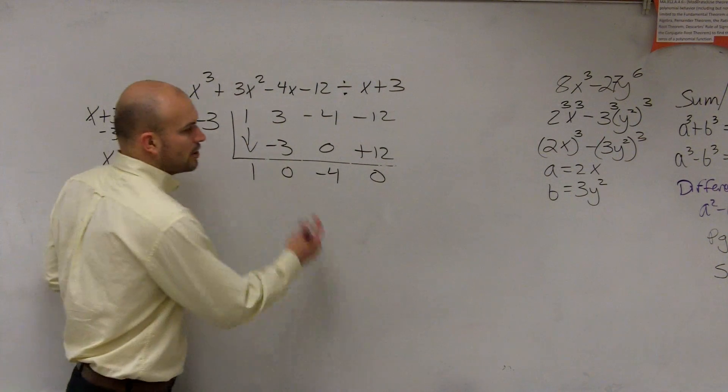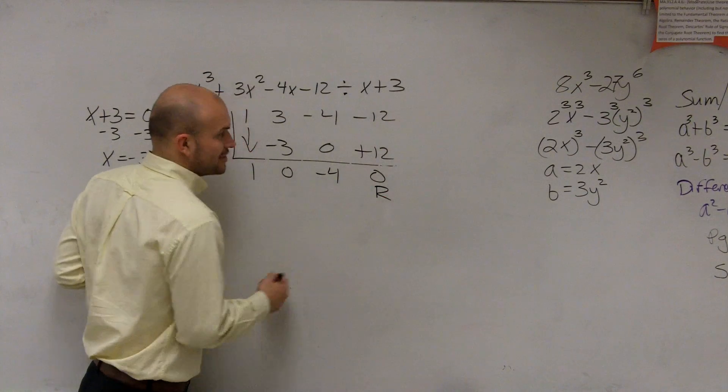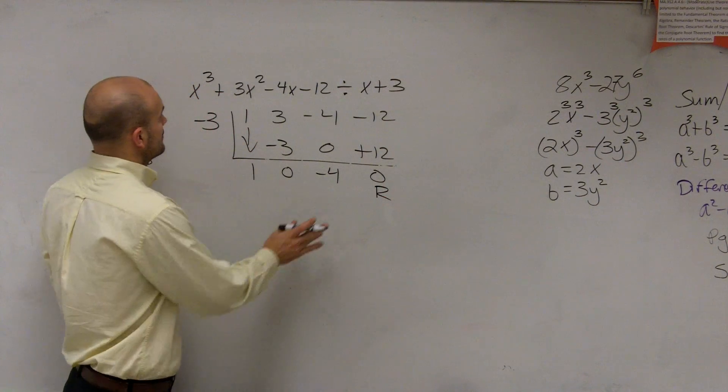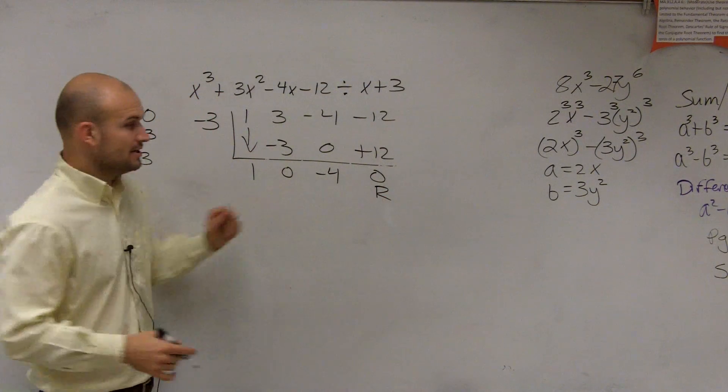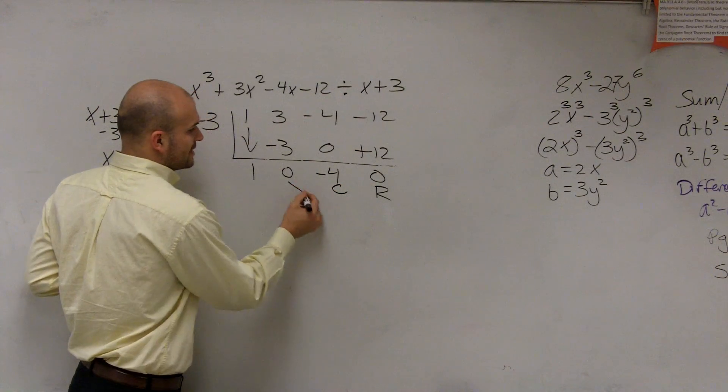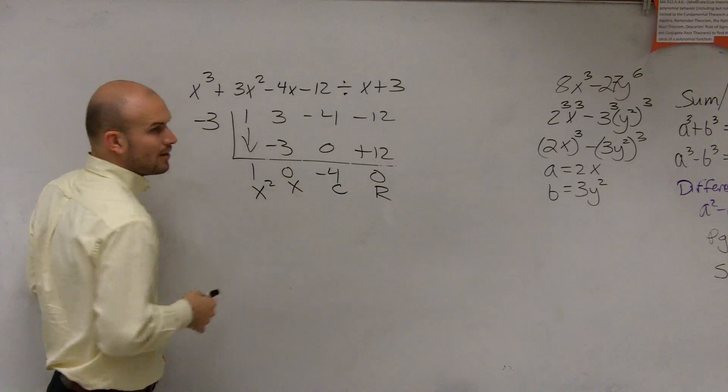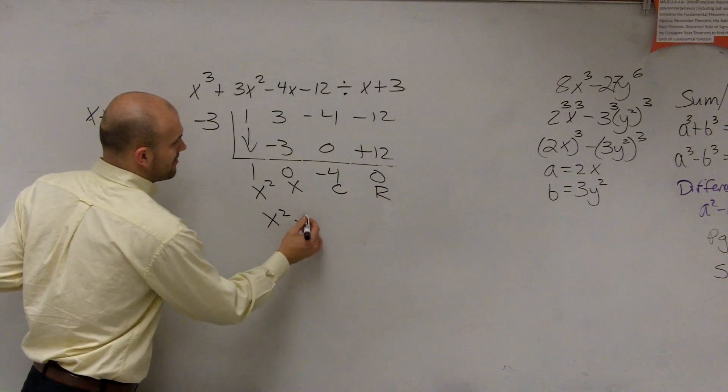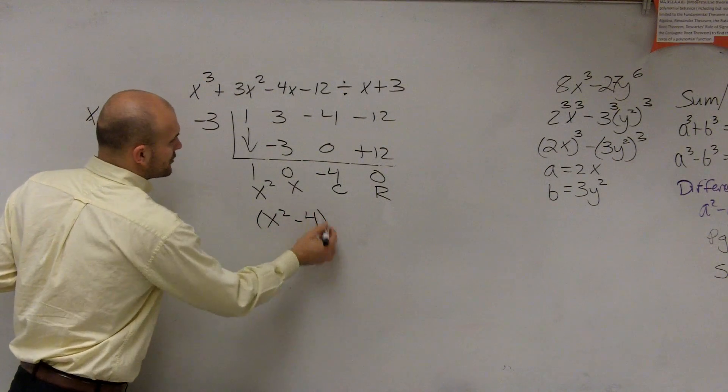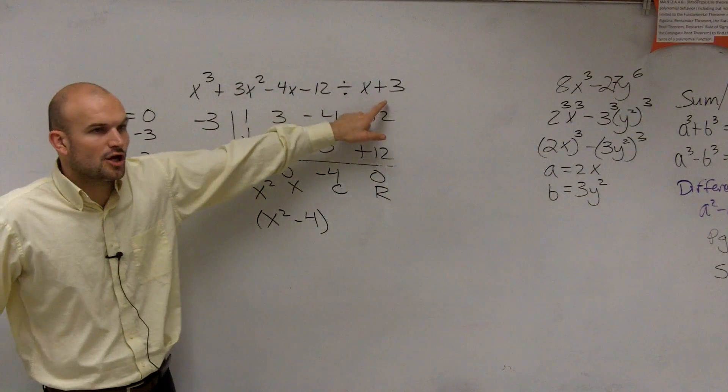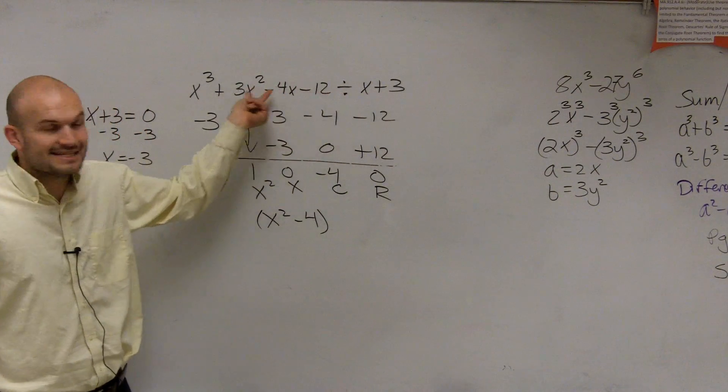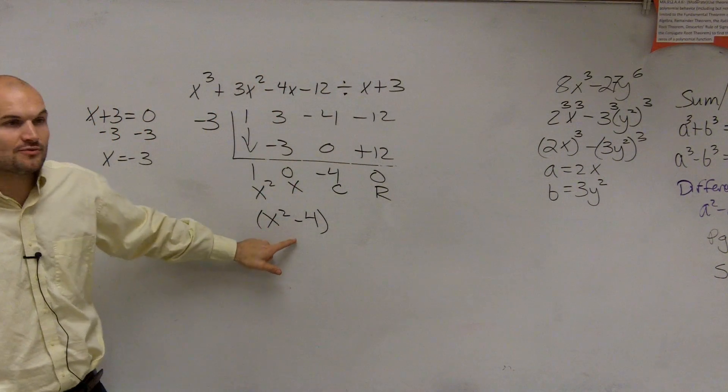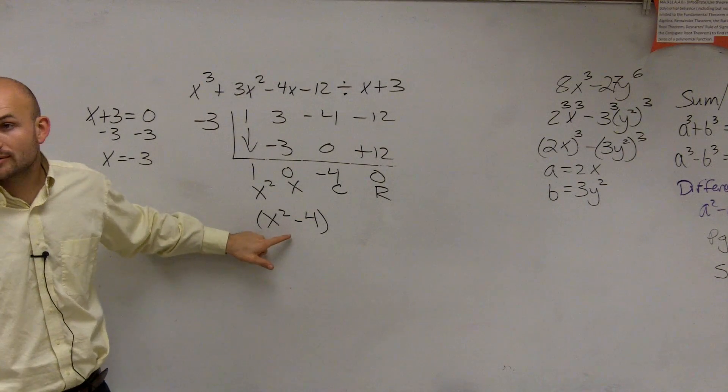Now, what we notice is, remember, we wrote our answer. We said, that's your remainder. This was your constant. Here's my linear, and here's my quadratic term. So therefore, what we had was x squared minus 4 was my other factor. That means when I take this polynomial and divide it into this polynomial, I'm left with a quotient of x squared minus 4.